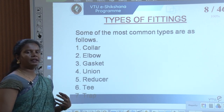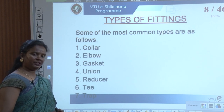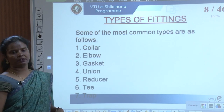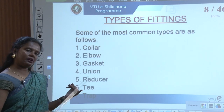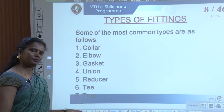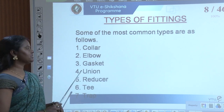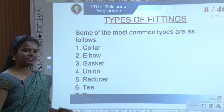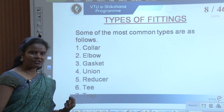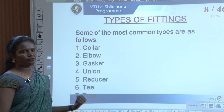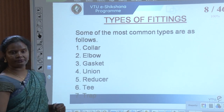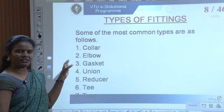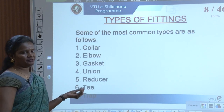Some of the most common types of fittings are: collar, elbow, gasket, union, reducer, tee, and trap. We will discuss all of these — the appliances, soil appliances, waste appliances, and the types of fittings in detail. These help in making the system efficient so that there is no leakage, the connection is strong, there is easy flow, and there is control of the whole thing.